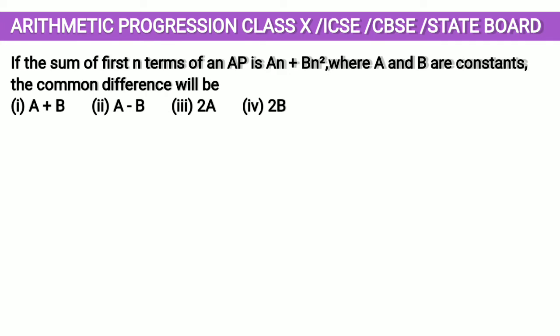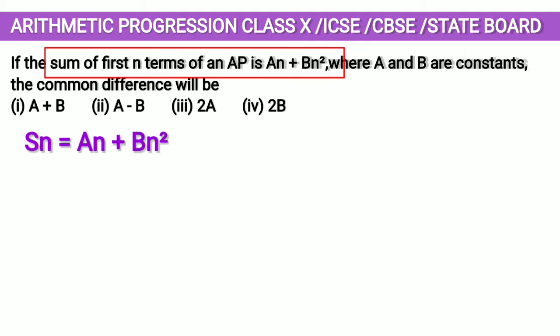We are given the formula to find sum of first n terms. So we have Sn = An + Bn². We have to find common difference D.